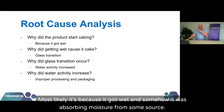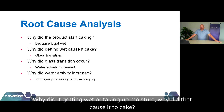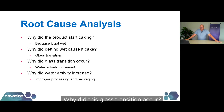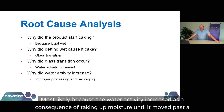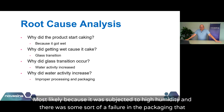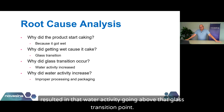As a consequence, they were seeing product recalls and having to refund money, costing them a lot. The product was free-flowing when put in the container, but was showing up caked. Why did this product start caking? Most likely because it was absorbing moisture from some source. Why did getting wet or taking up moisture cause it to cake? Most likely because it experienced a glass transition. Why did this glass transition occur? Most likely because the water activity increased as a consequence of taking up moisture until it moved past a critical water activity — the water activity at which the glass transition occurs. Why did this water activity increase? Most likely because it was subjected to high humidity with some sort of failure in the packaging.